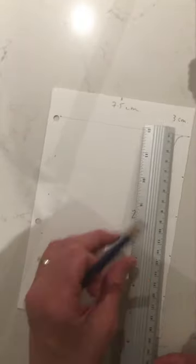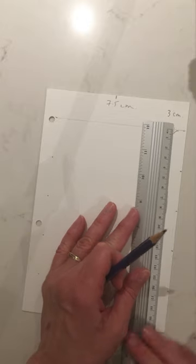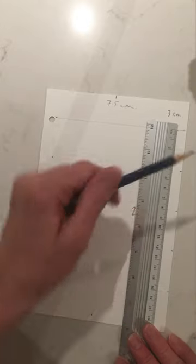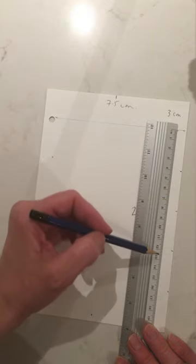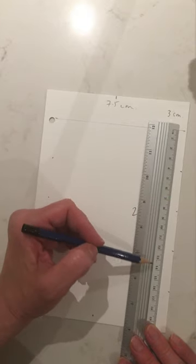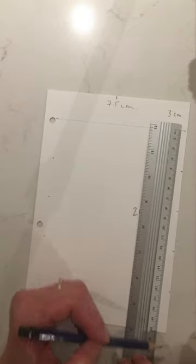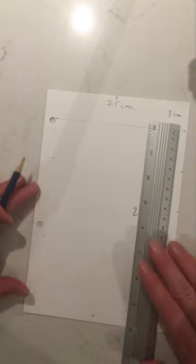So from the line, notching off four centimeters, eight, twelve, sixteen, and then the bottom would be twenty.